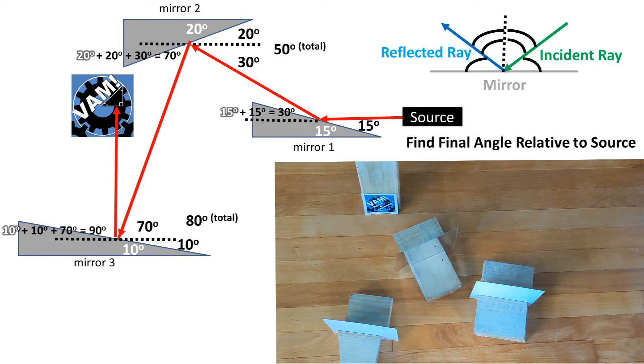This beam then bounces off of a third mirror at an 80 degree angle from the surface of the mirror. Adding the 10 degree angle of the mirror, we get 90 degree angle from the light source. 10 degrees plus 10 degrees plus 70 degrees. So the light from the source travels at a 90 degree angle from the source after bouncing off of these three mirrors.